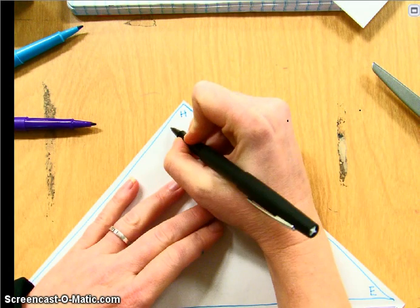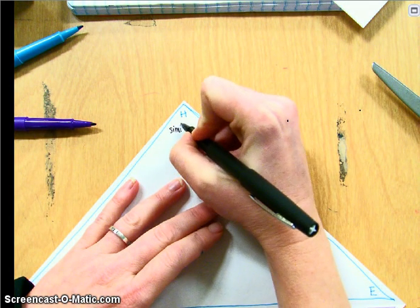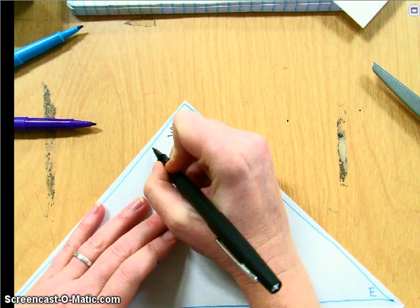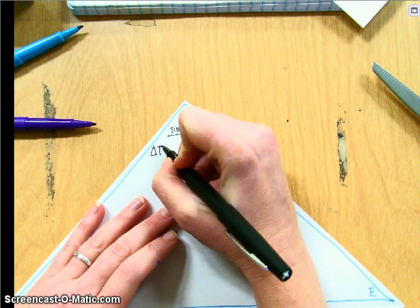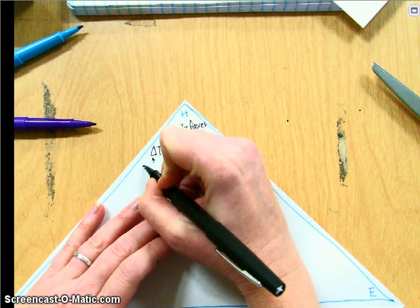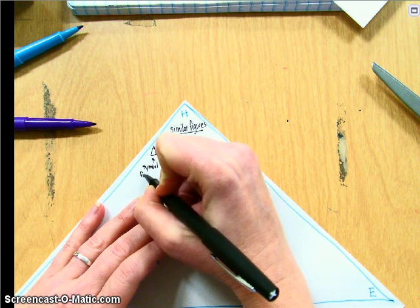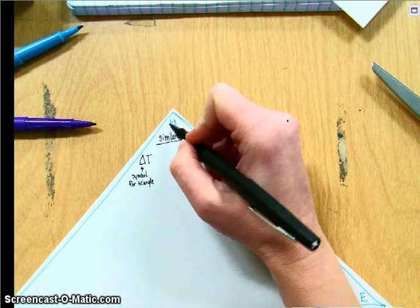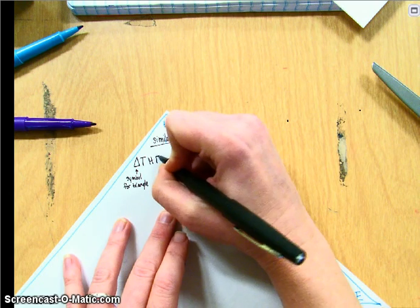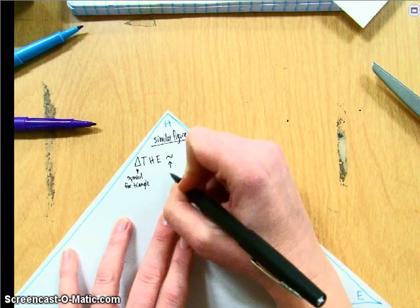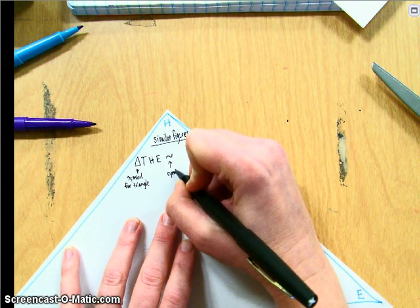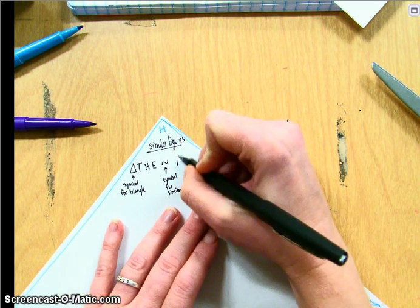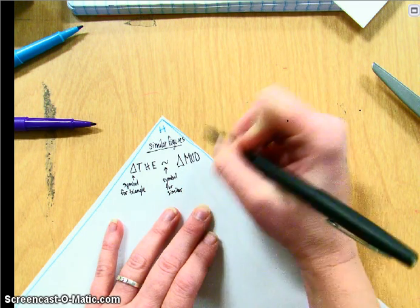So here, what you need to know about similar figures, here is a similarity statement. Triangle, and this is the symbol for triangle. Triangle THE is similar, this is the symbol for similar, to triangle MUD.